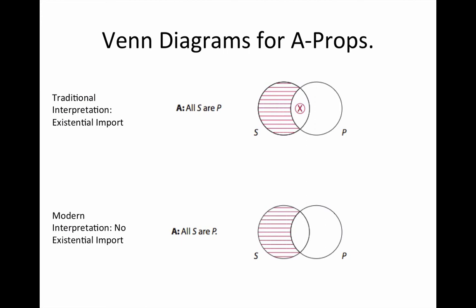Now drop your eye down to the modern interpretation. The modern interpretation suspends judgment about existential import. This helps us when we think about propositions where we are pretty confident that the subject class is empty — 'all leprechauns are gold hoarders,' 'all werewolves are frightening creatures,' 'all vampires are blood-sucking undead.' Those subject classes don't have any members. The modern interpretation says whether we're talking about dogs, cats, vampires, werewolves, or leprechauns, we're not going to assume a member of the subject class.